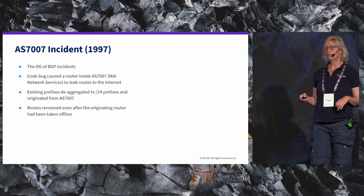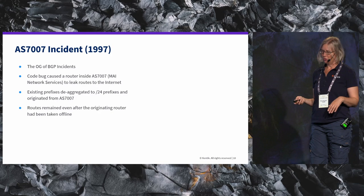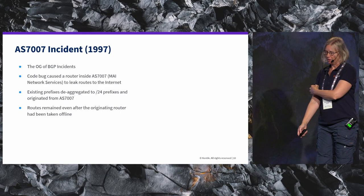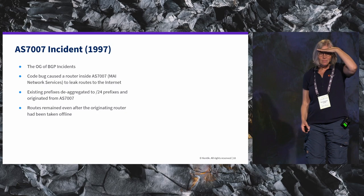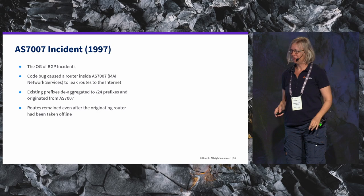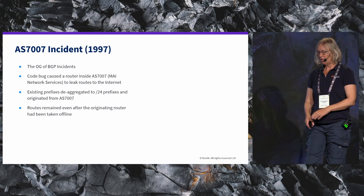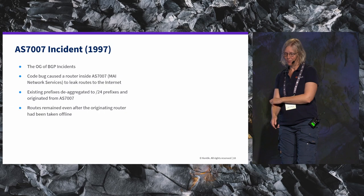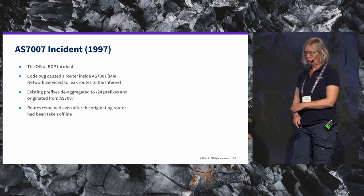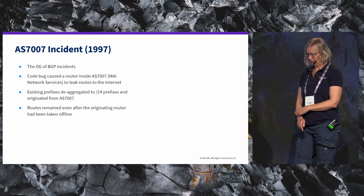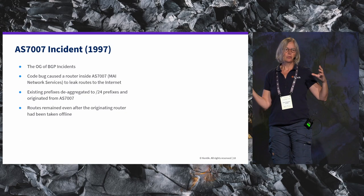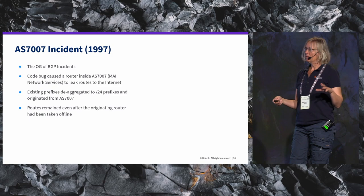This is the original — the OG — of BGP incidents, which happened all the way back in 1997. Basically, there was a bug inside a small network in the US, and they de-aggregated the whole routing table to slash 24s and then sent those to the rest of the internet. Because of how software worked, we had a lot of ghost routes all over. So it was quite a big incident. You can find a link in the presentation if you want to read about this first big one.